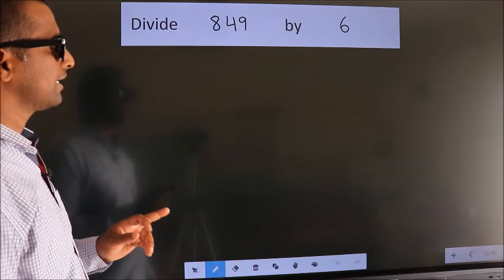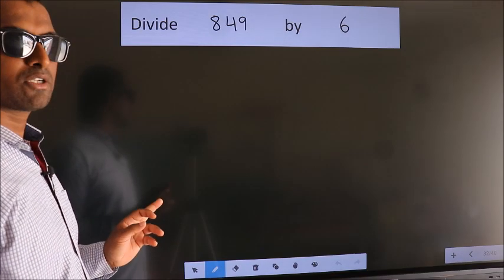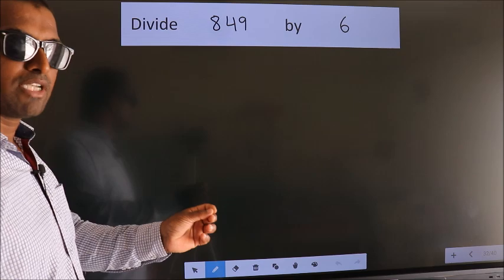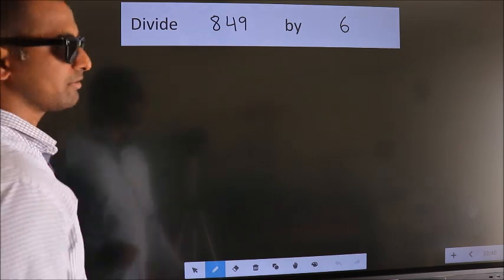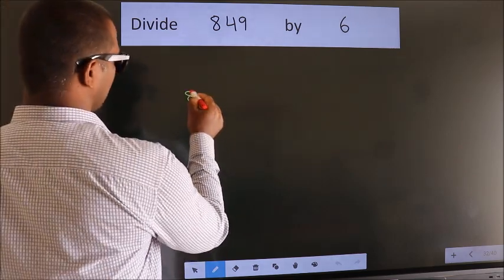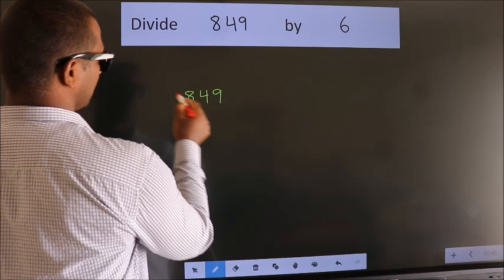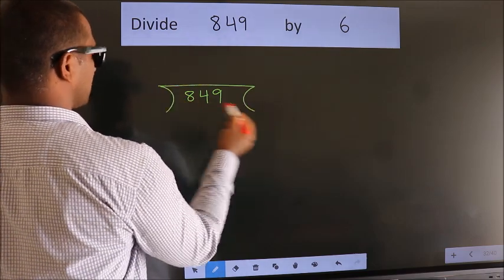Divide 849 by 6. To do this division, we should frame it in this way: 849 here, 6 here.